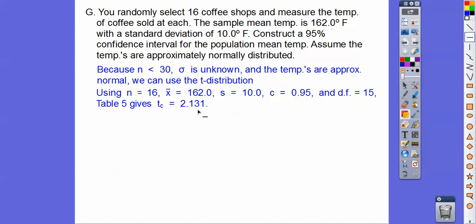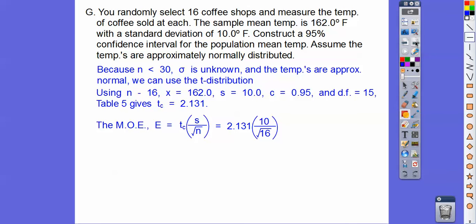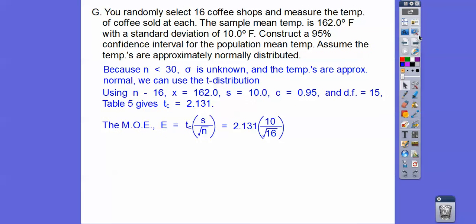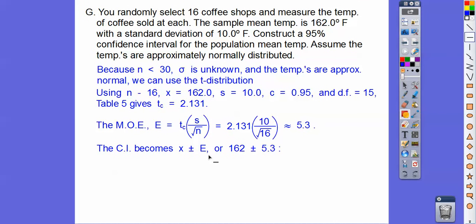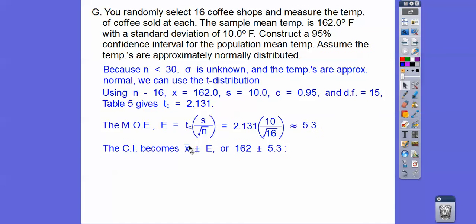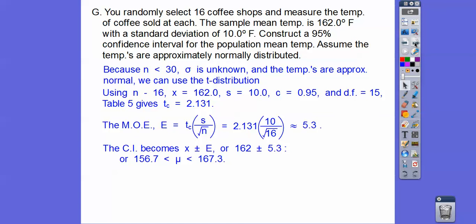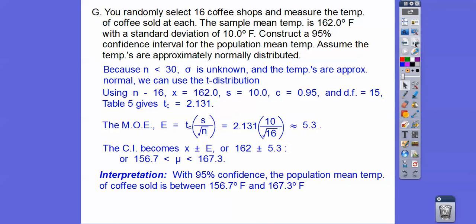We look at table 5, go down to degrees of freedom 15, and over to 95% confidence, giving a t-score of 2.131. Plugging into the margin of error formula: 2.131 times 10 divided by the square root of 16, we get approximately 5.3.